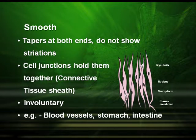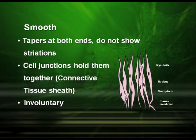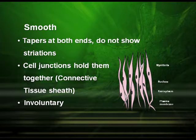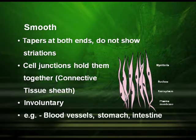The smooth muscular tissues have tapering ends — both ends taper — and they do not show any striations as found in skeletal tissues. They have cell junctions which hold them together via a connective tissue sheath, and they are also known as involuntary tissues. They are found in the blood vessels, stomach, and intestine.